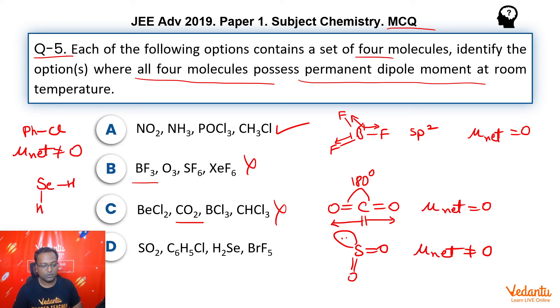H2SE, you will have structure like this. If you remember, Drago's rule is applicable here. There is no hybridization. This bond angle is roughly equal to 90 degree. And therefore, again, mu net is not equal to zero.